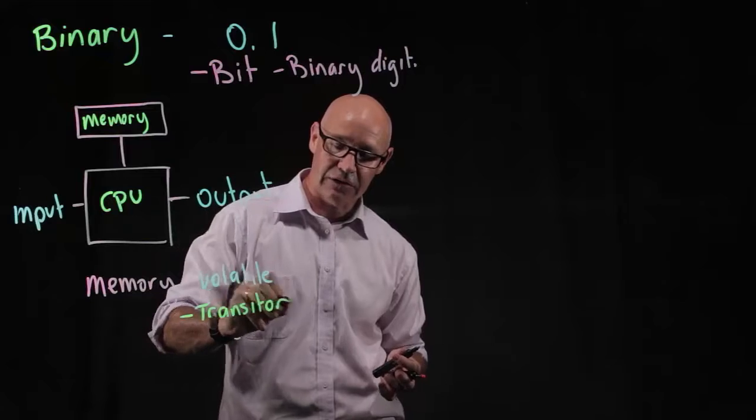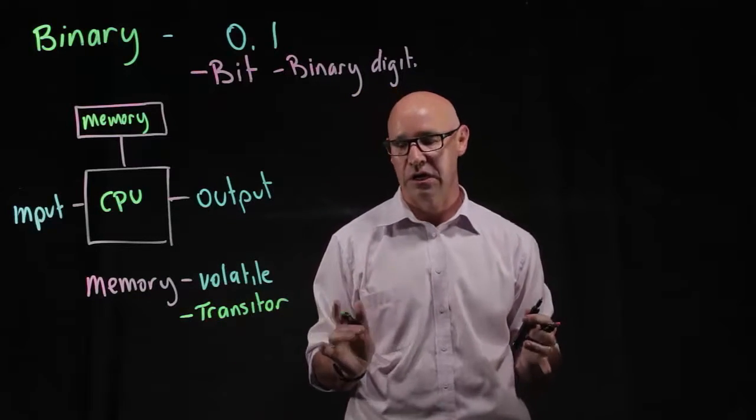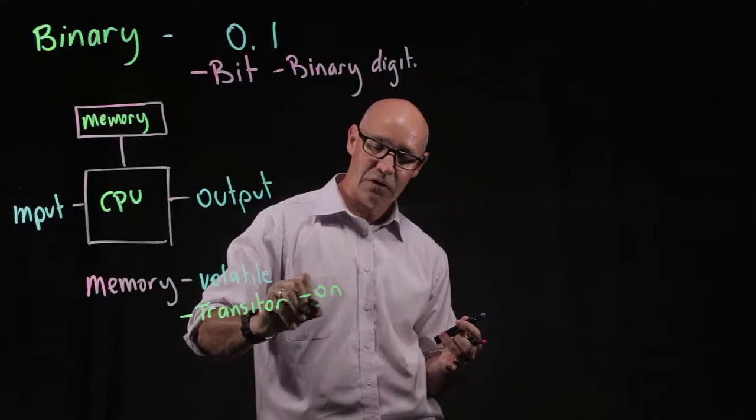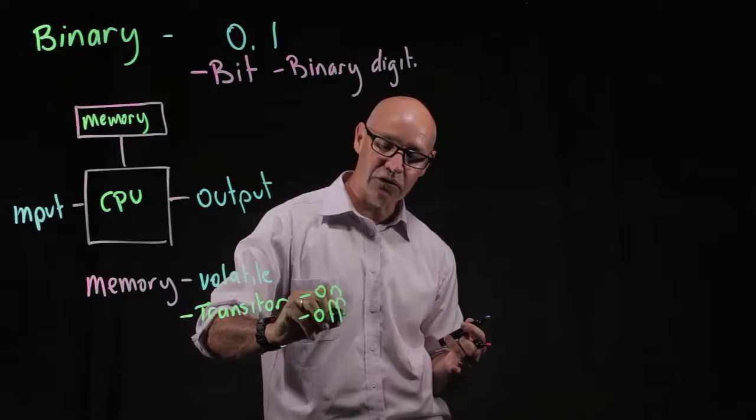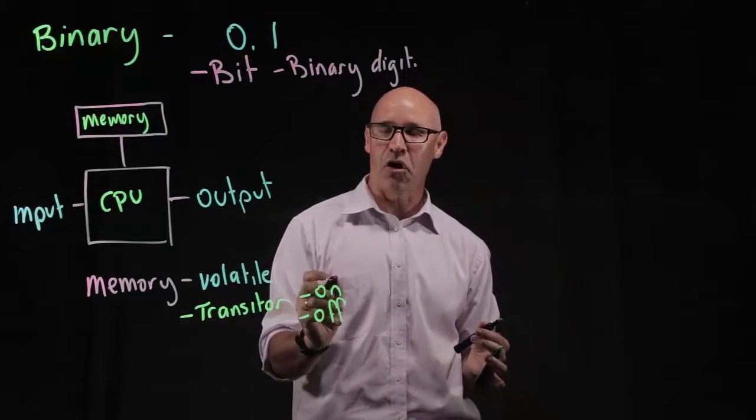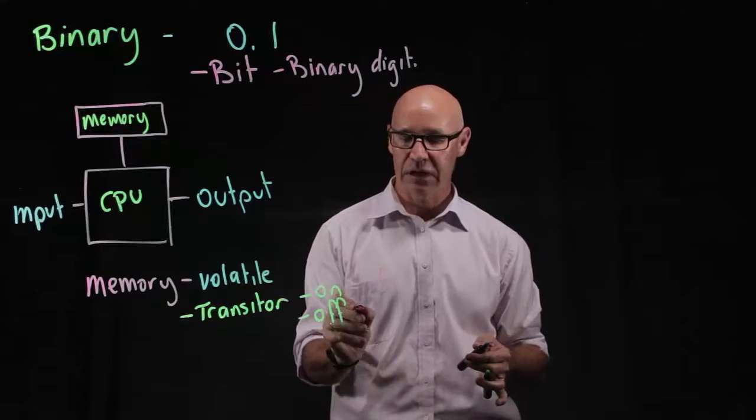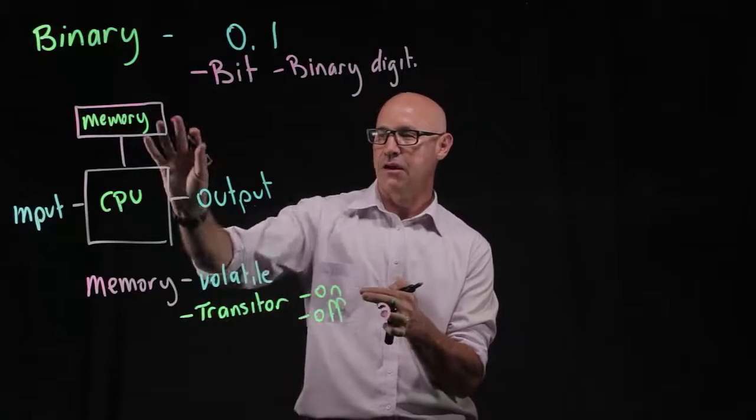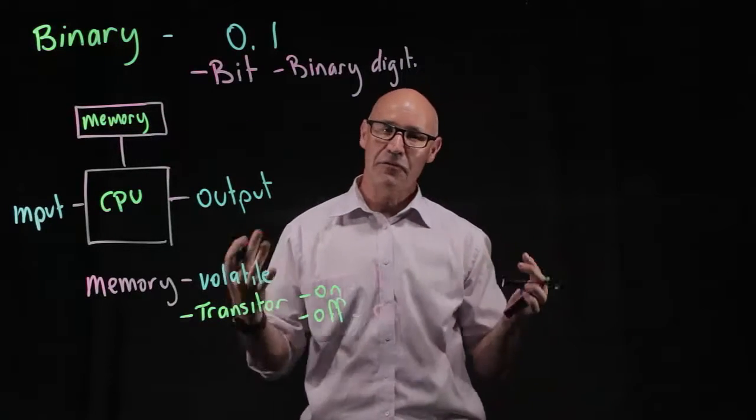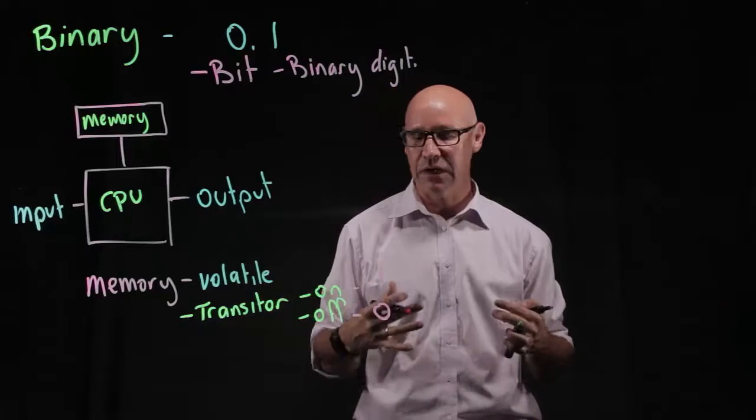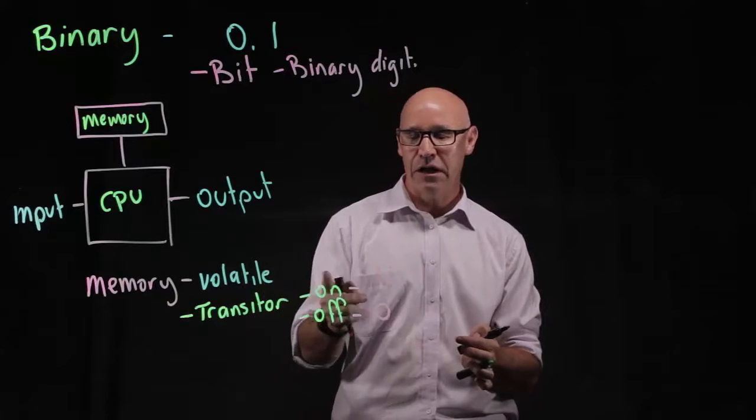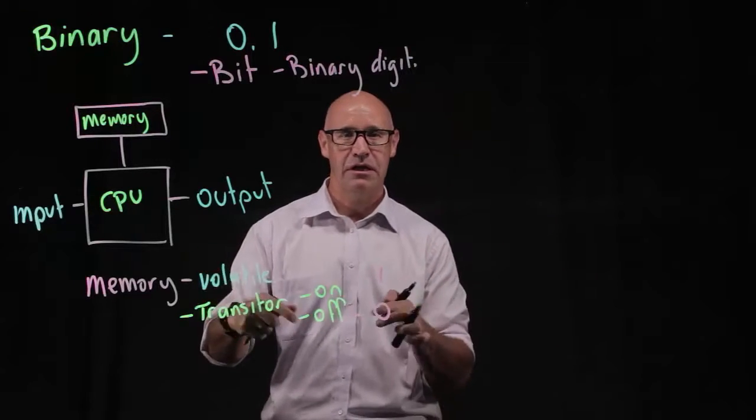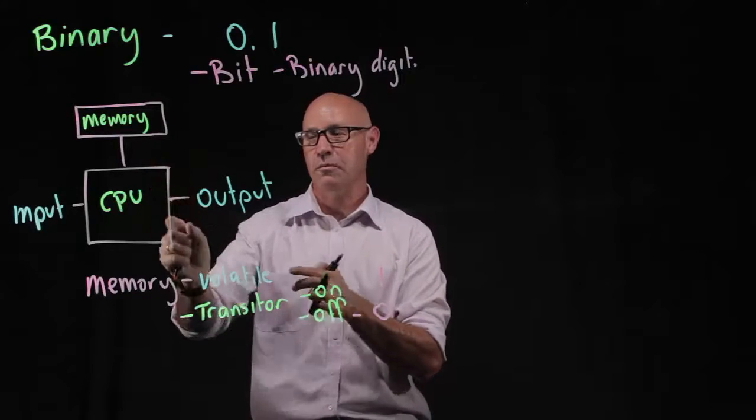And a transistor is a switch, an electric switch, that when an electric signal is passed through it, it's either on or it's off. It's only got two states, on or off. When it's on, that is a one. And when it's off, it's a zero. So our CPU and our RAM have millions of transistors that are either on or off. And that is how the memory of a program is stored whilst it's being executed.